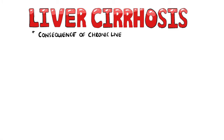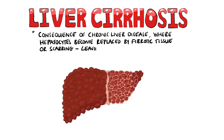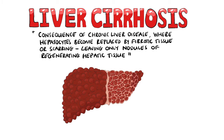Cirrhosis is a condition that is a consequence of chronic liver disease, in which the healthy liver cells become replaced by fibrotic tissue or scarring, leaving only small islands of regenerated hepatic tissue. As a result, the liver is no longer able to carry out its functions properly.